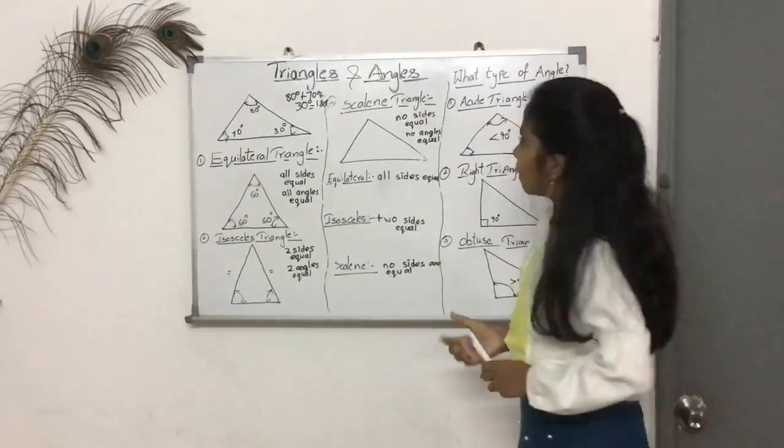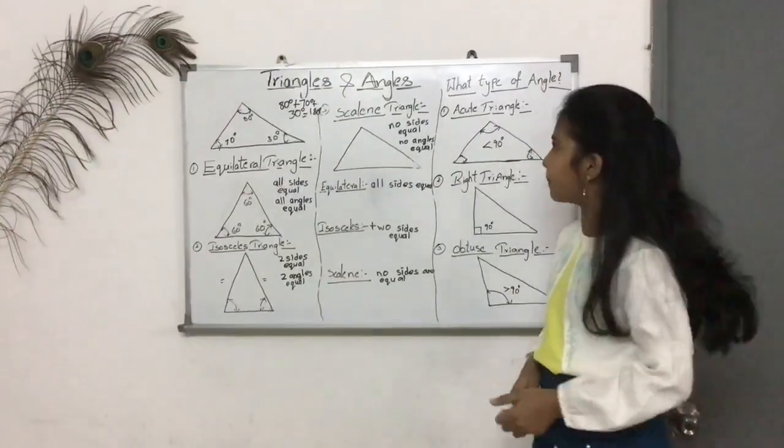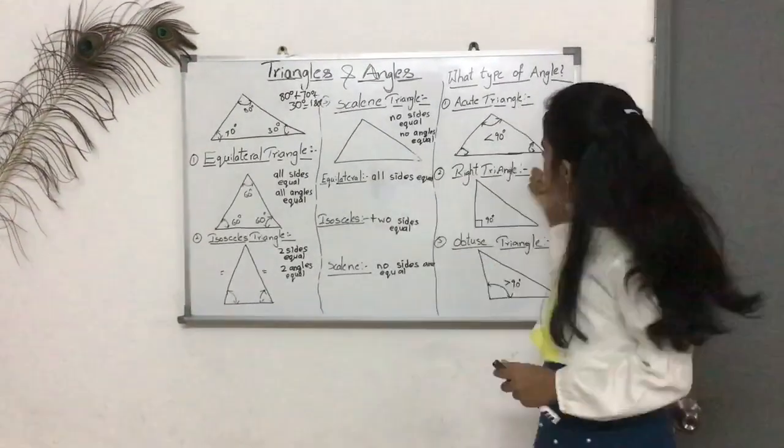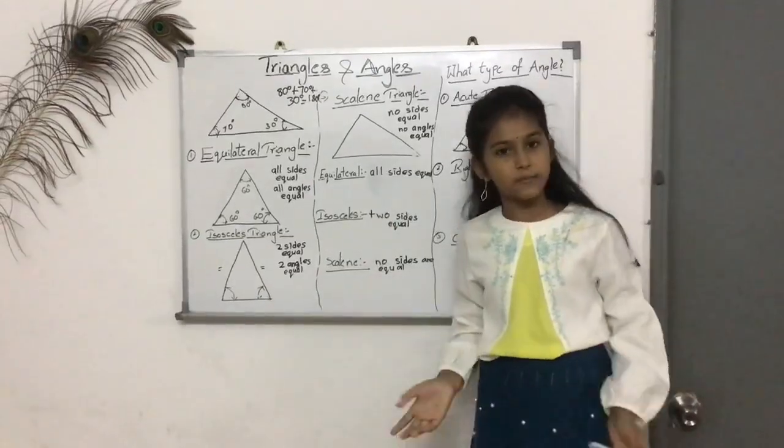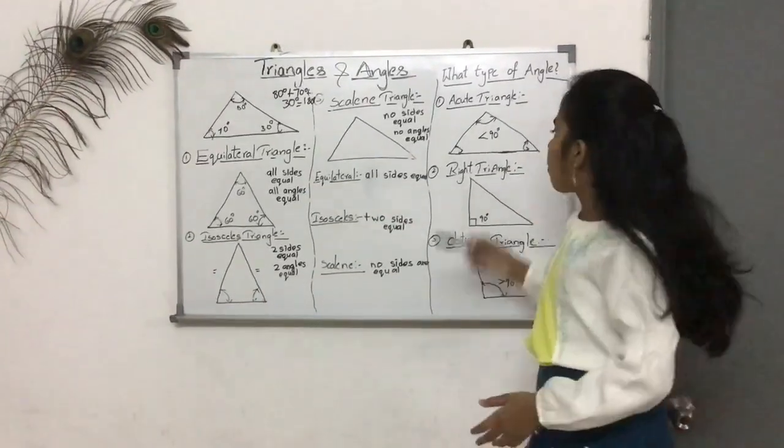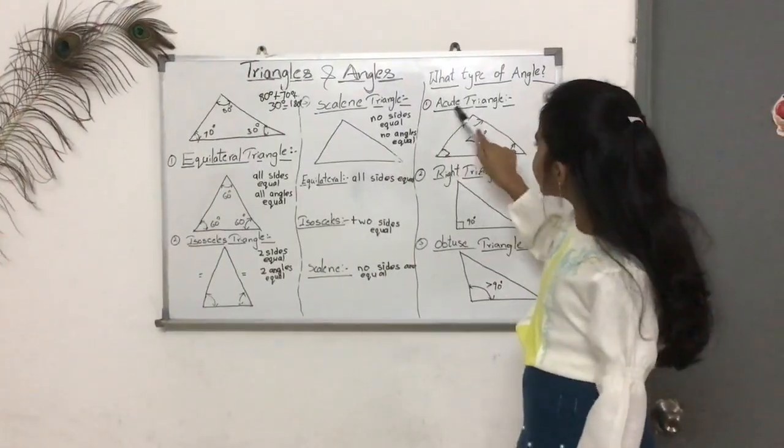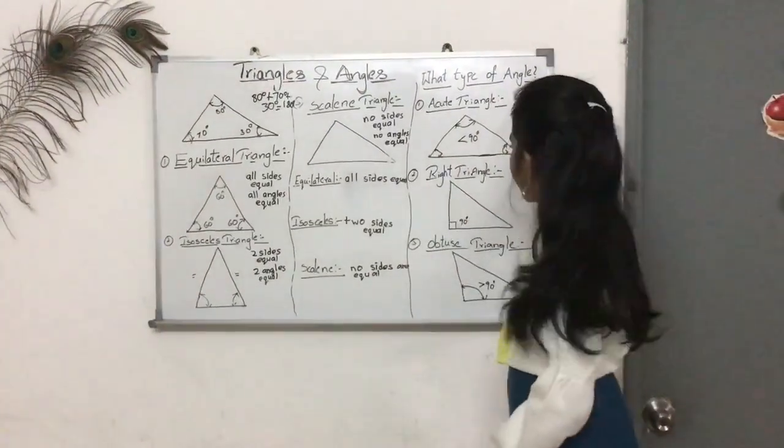And now, let's go into our second topic, angles. Now, what type of angle? Now, triangles have their own names so that we can know what type of angle is inside. Now, number one, this is called the acute triangle.